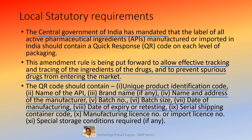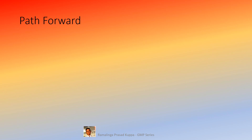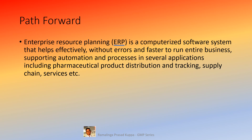There is also a recommendation for necessary control to prevent spurious drug products from entering the market. The QR code should contain: unique product identification code, name of the API, brand name if any, name and address of the manufacturer, batch number, batch size, date of manufacturing, date of expiry or retesting, serial shipping container code, manufacturing license number or import license number, and special storage conditions required if any. All the information provided here must be part of the QR code label.